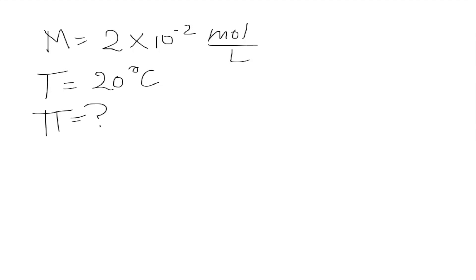So out of our formula, π = IMRT, right now we have T and M, and we know that R is a constant, 0.0821 atmosphere·liter/(mol·K). The Van't Hoff factor is equal to 1 because we have a molecular compound.